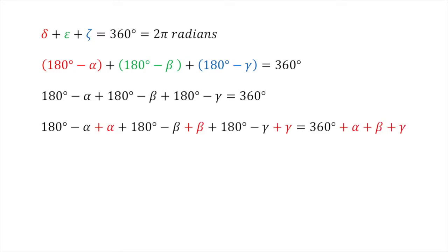We now add alpha, beta, and gamma to both sides of the equation giving us 3 times 180 degrees equals 360 degrees plus alpha plus beta plus gamma.